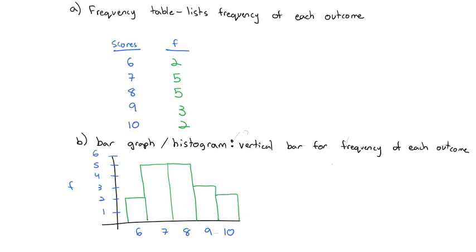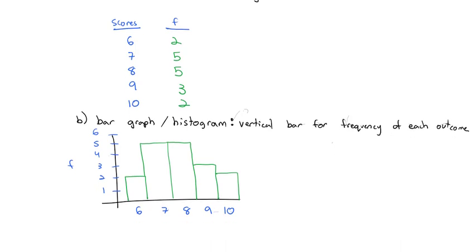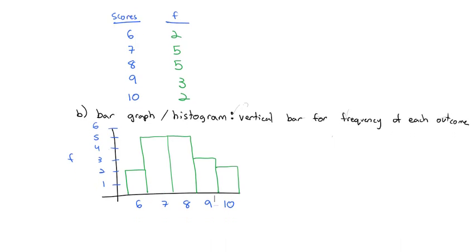In this way, we end up with a nice little bar graph that visually shows what's in that frequency table above. Now I can see people are clustered around 7 and 8, a few scoring higher and a few scoring lower, and I get a better idea of the distribution of the scores.